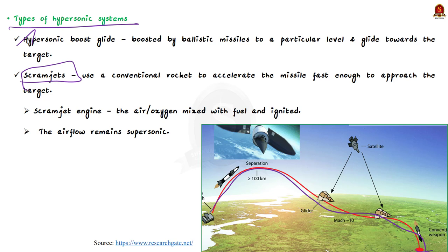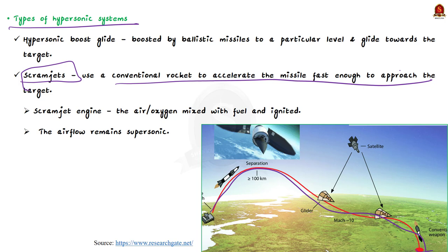Hypersonic boost-glide systems are boosted by ballistic missiles to a certain altitude, then glide toward the target. Scramjets use a conventional rocket to accelerate the missile fast enough for the scramjet engine to take over. In a scramjet engine, air or oxygen taken from the atmosphere is mixed with fuel and ignited, and airflow remains supersonic throughout.